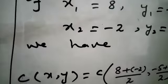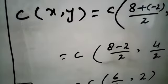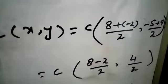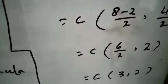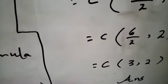We have C(x, y) becomes (8 plus -2) divided by 2, (-5 plus 9) by 2. Solve it, we will get (8 - 2) by 2, (-5 + 9 becomes 4) by 2 which is equals to 6 by 2, 2 that is equals to (3, 2) which is the required answer.